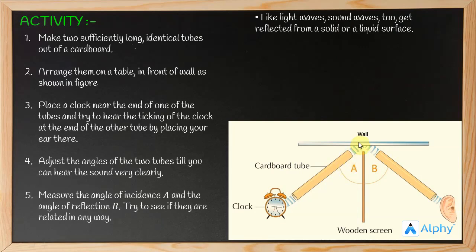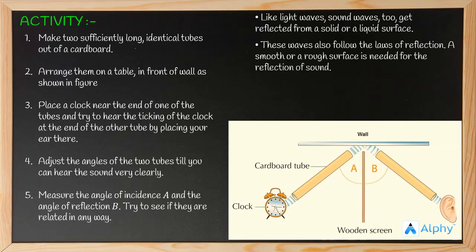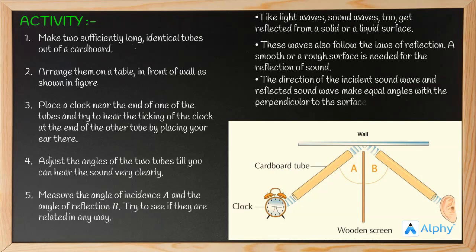Like light waves, sound waves too get reflected from solid or liquid surfaces. These sound waves hit the wall and reflect back into the tube. Sound waves also follow the law of reflection. A smooth or rough surface is needed for the reflection of sound. The direction of incident sound wave and reflected sound wave make equal angles with the perpendicular to the surface, and all lie in the same plane.